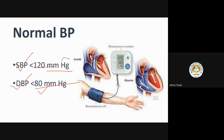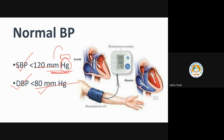Mercury is used in the sphygmomanometer because it is more sensitive than other metals. Even a small variation in pressure causes mercury to go up and down significantly, showing clear variation. This is the same reason mercury is used in thermometers — it is highly sensitive to changes.